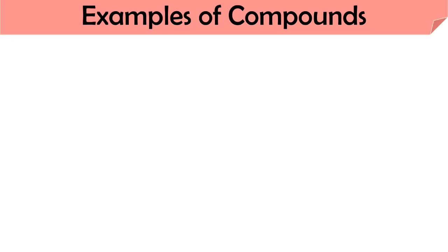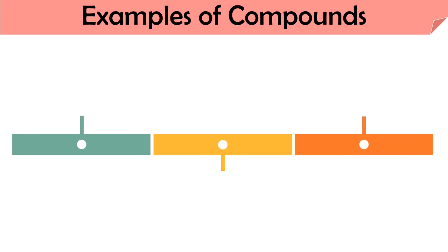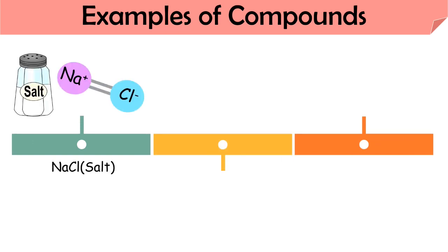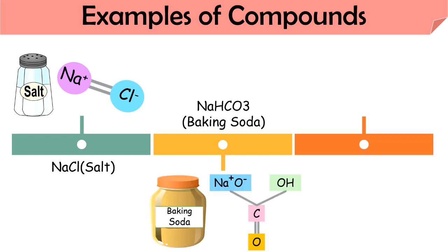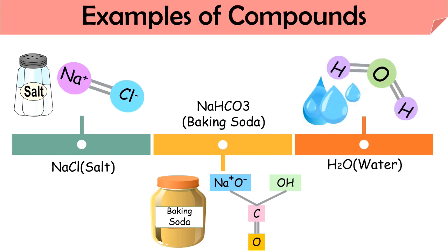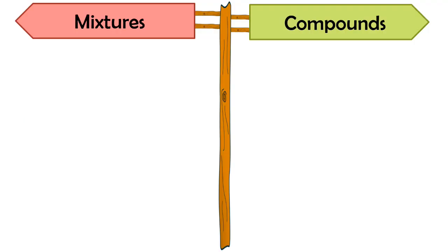Examples of compounds are present everywhere around us. Sodium chloride or NaCl, which is normal salt, is also a compound formed by chemical interaction between sodium and chlorine. Another example is baking soda or NaHCO3. Water is also a compound formed from hydrogen and oxygen.